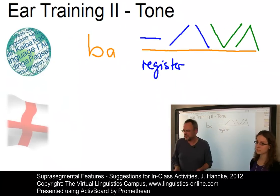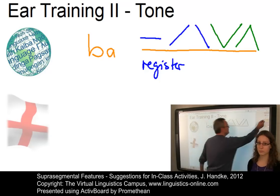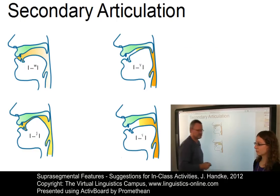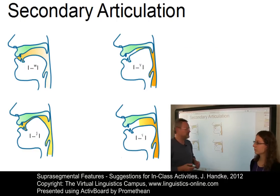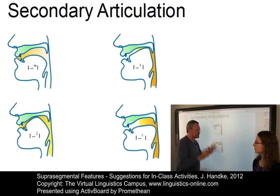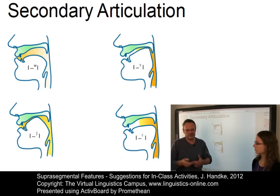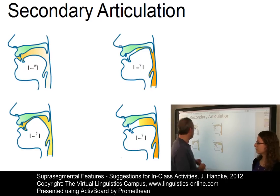Before we summarize, we should not forget another suprasegmental effect: secondary articulation. Here are the main types. They have all been explained in the workbook, in the virtual session, and in the e-lecture. So all you can do in class is produce and practice them.